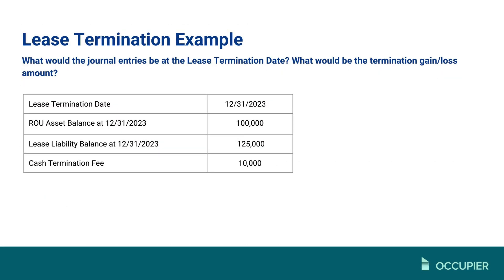For this fairly simple example: what would the gain or loss be given the following facts? The lease termination date was 12-31-2023. For simplicity purposes, let's assume this termination was a surprise, meaning none of the caveats from the previous slide were applicable. We're going to calculate the difference between the right-of-use asset and the lease liability, and also how we treat the termination fee within our journal entries.